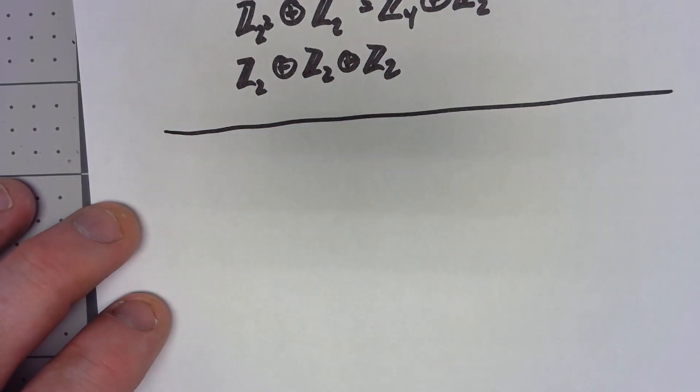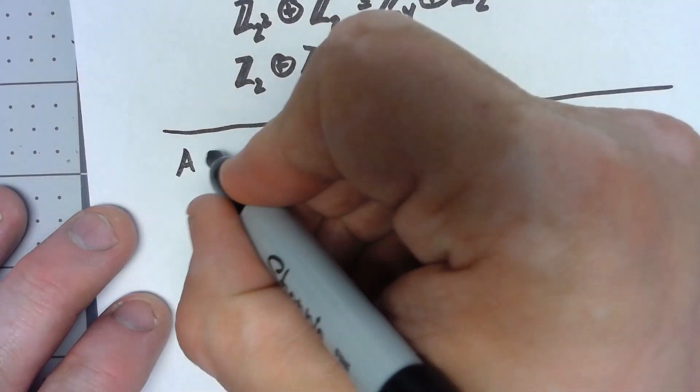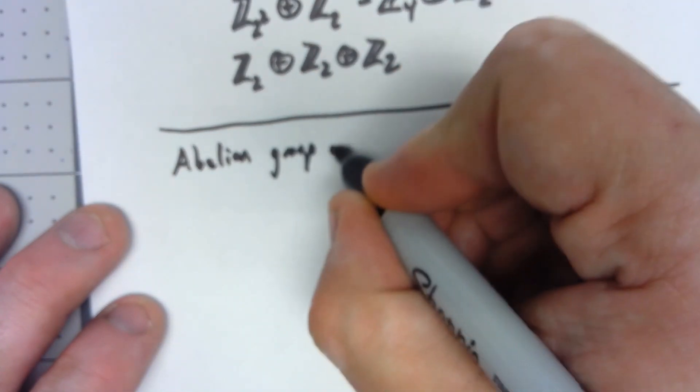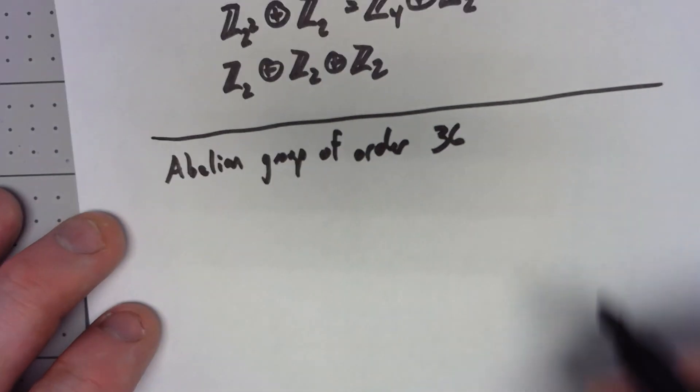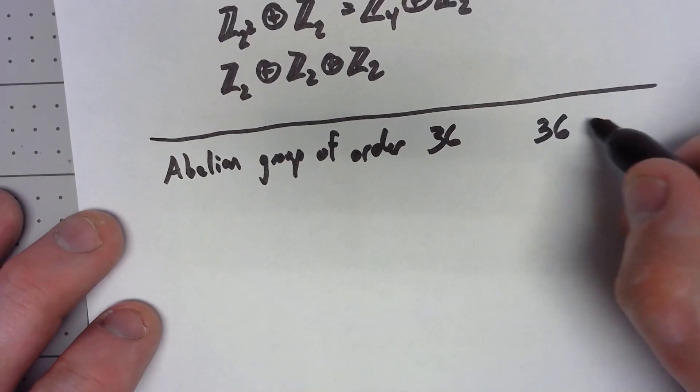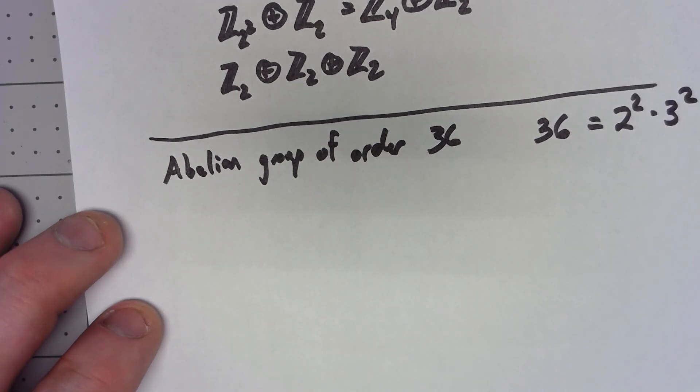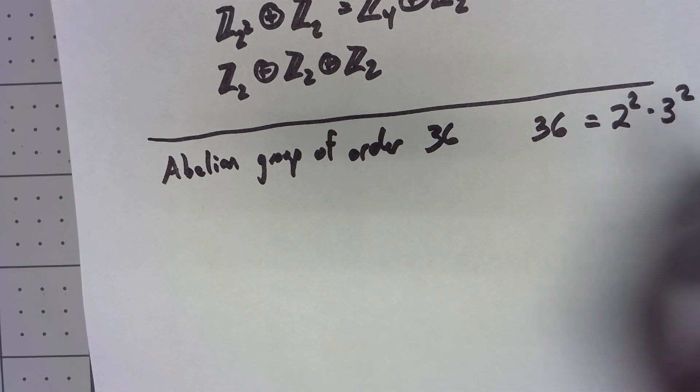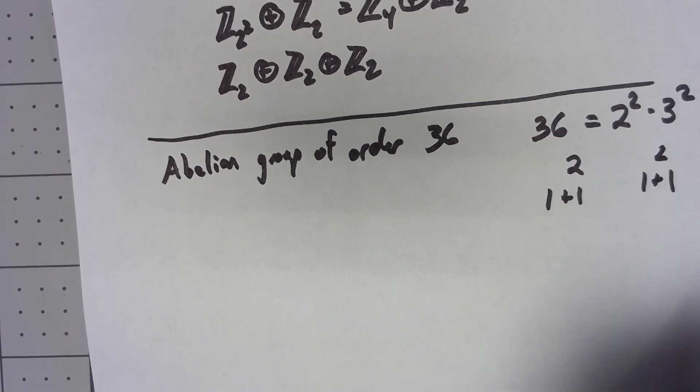What happens though if we've got more than one prime in our order? So let's say we had an abelian group of order 36. Well 36 is 2 squared times 3 squared, and we break down each one.